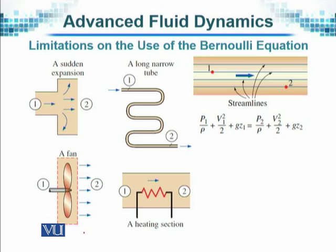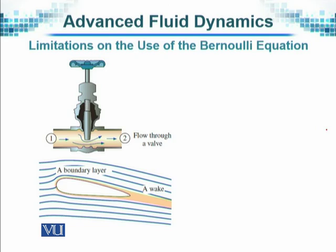Here are some examples showing the limitations of the Bernoulli equation and where it can be applied. The pictures on the left-hand side show problematic situations — there is a fan, there is heating — these are not valid cases. On the right-hand side, along the streamlines, the equation is valid at point 1 and point 2 and will be constant. Where there is a valve, there is a limitation and Bernoulli's equation cannot really be applied because the pressure will be changing and a different situation occurs.